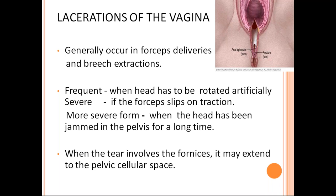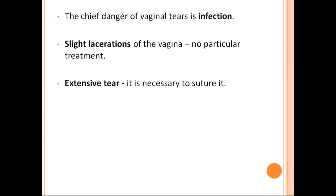Coming to lacerations of the vagina — these generally occur in occipito-posterior pelvis and forceps or ventouse extraction. They are frequent when the head has to be rotated artificially, as in high or mid occipito-posterior position. More severe forms occur when the head has been impacted in the pelvis for a long time. When the tear involves the fornices, it may extend to the pelvic cellular space and should be sutured under anesthesia. Minor lacerations without bleeding can be left to heal on their own due to good blood supply; if bleeding, suturing is necessary.